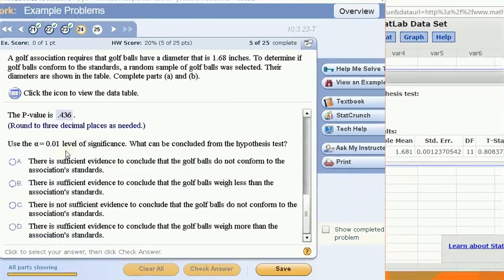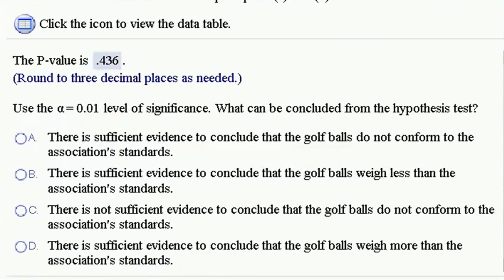Do we reject at an alpha level of 0.01? Well, clearly, the p-value is higher than that. Whenever the p-value is greater than your alpha level, we do not reject. So there is not sufficient evidence to conclude the golf balls do not conform. This evidence is inconclusive. We can't reject the null hypothesis.